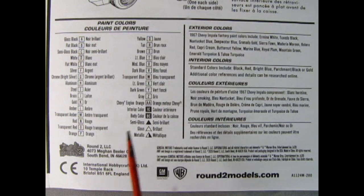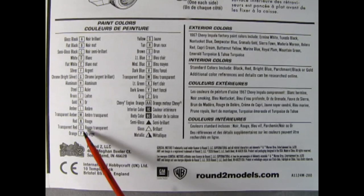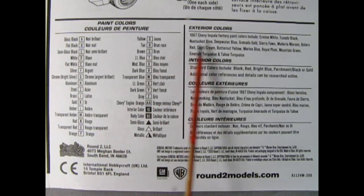Round two finishes off their instruction sheet with a full paint color call out and the symbols identifying each of the colors as you go through the instructions. A guide to the exterior colors and the interior colors.